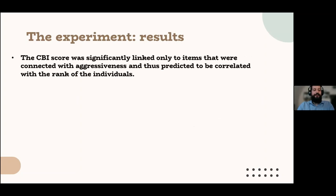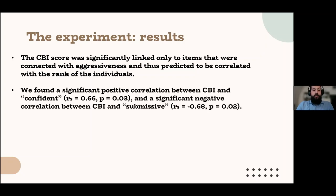As for the Clutton-Brock index, it was significantly linked to the items that were connected with aggressiveness, and that were therefore predicted to be correlated with the acquisition of the rank of the individuals. We actually found a significant positive correlation between the index and confident, and a significant negative correlation between the index and submissive.